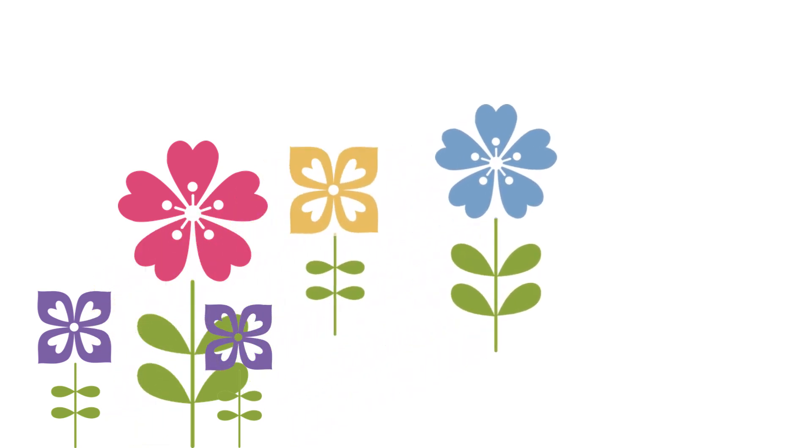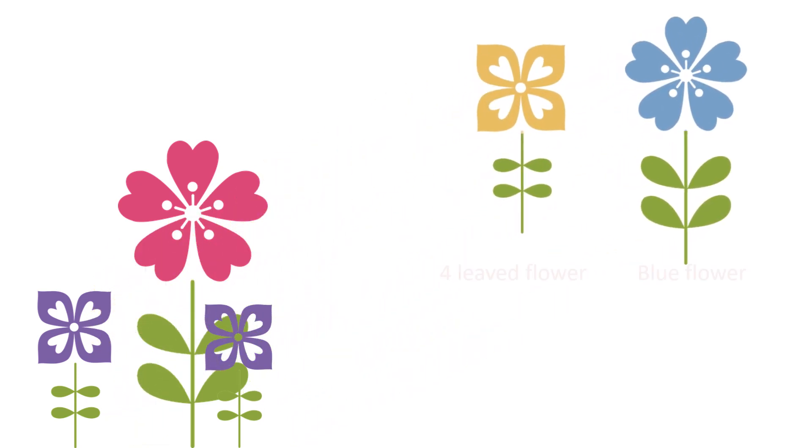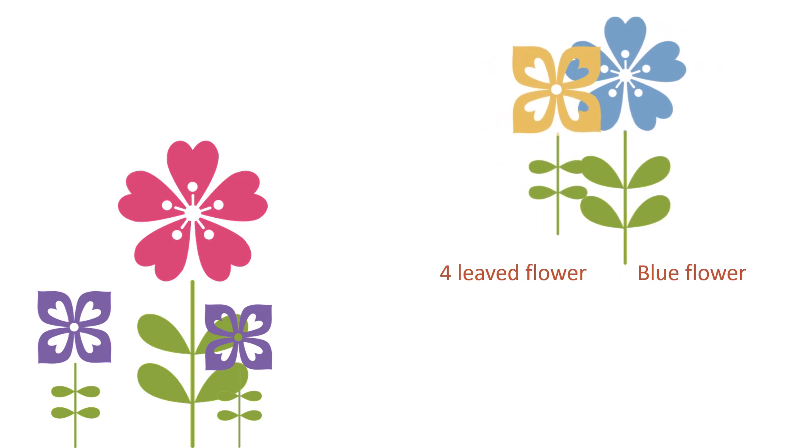Selective breeding involves choosing parents with the desired characteristics from a mixed population. For example, here the desired features are flowers with four leaves and a blue colour, so these flowers are chosen and bred together.